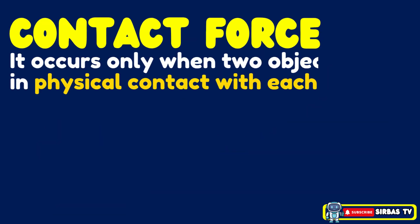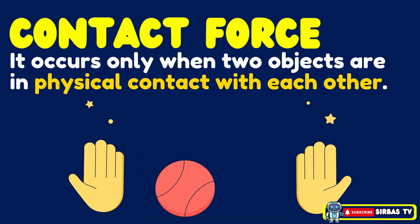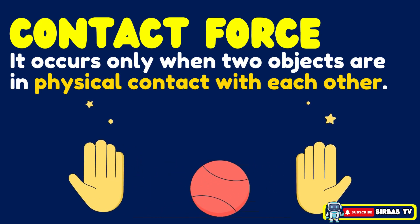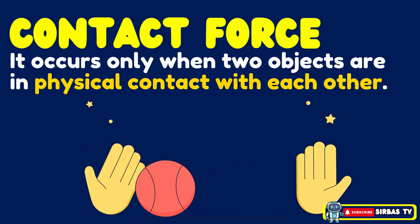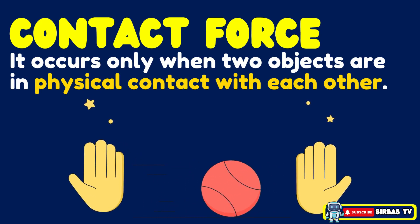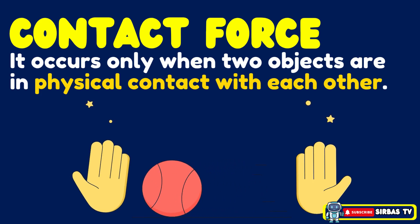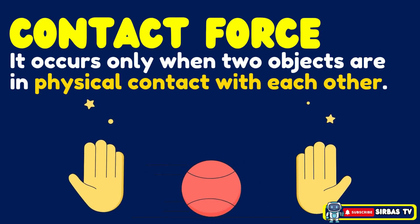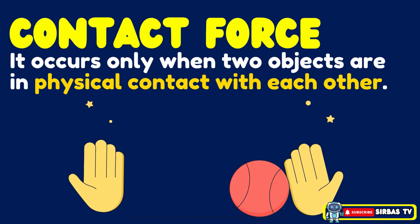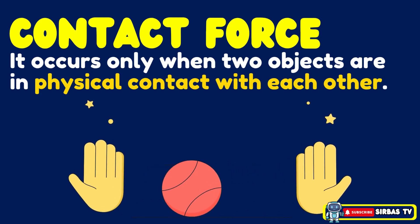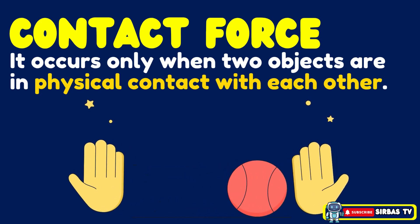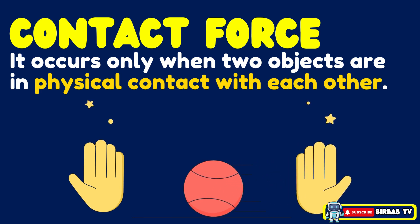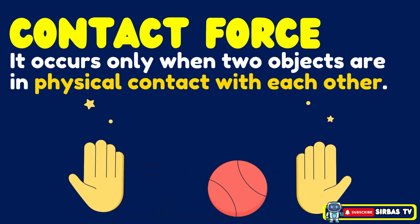A contact force occurs only when two objects physically touch each other. For example, the ball moves because it is passed from one hand to another through direct contact. In other words, if one object does not touch the other, the force cannot happen.